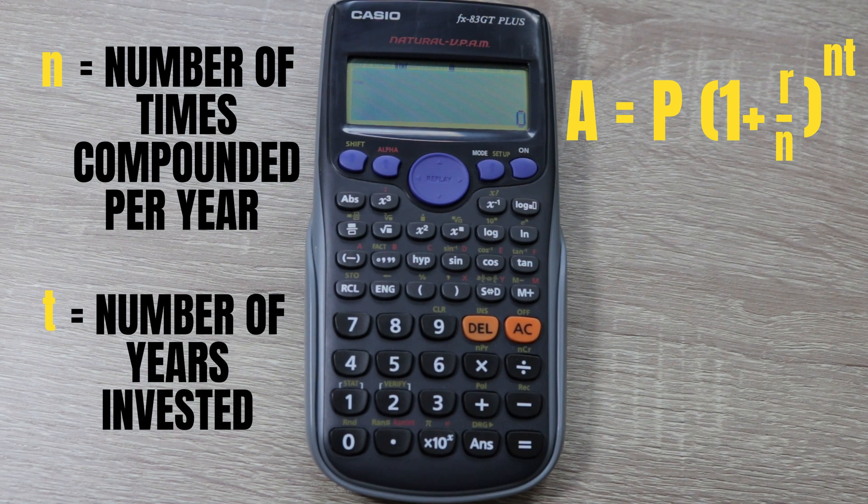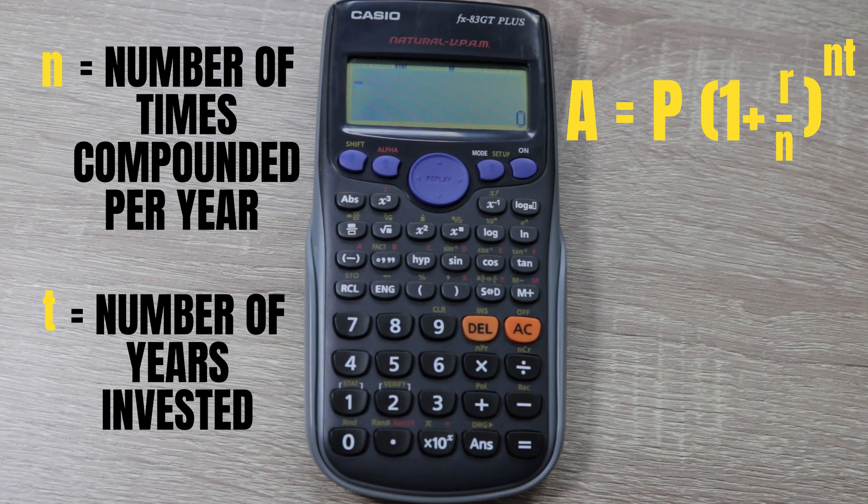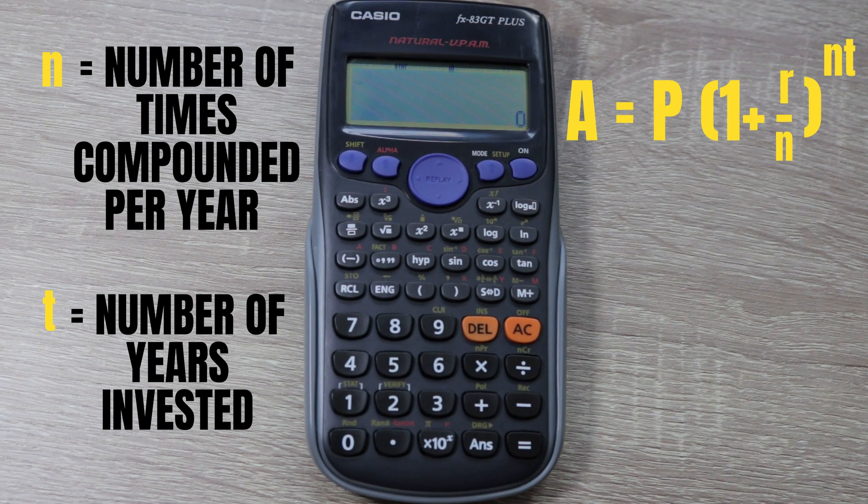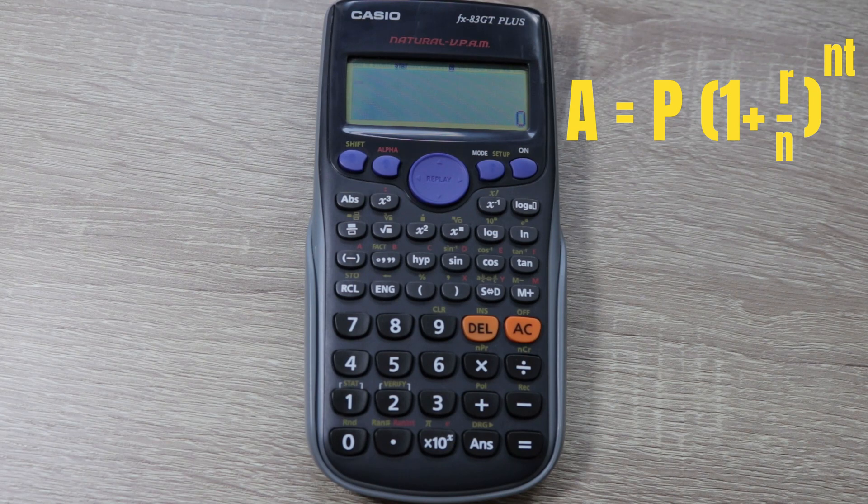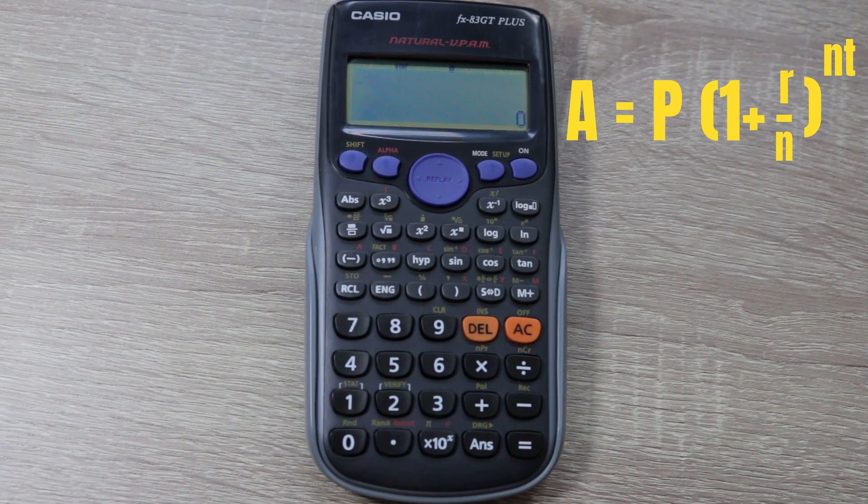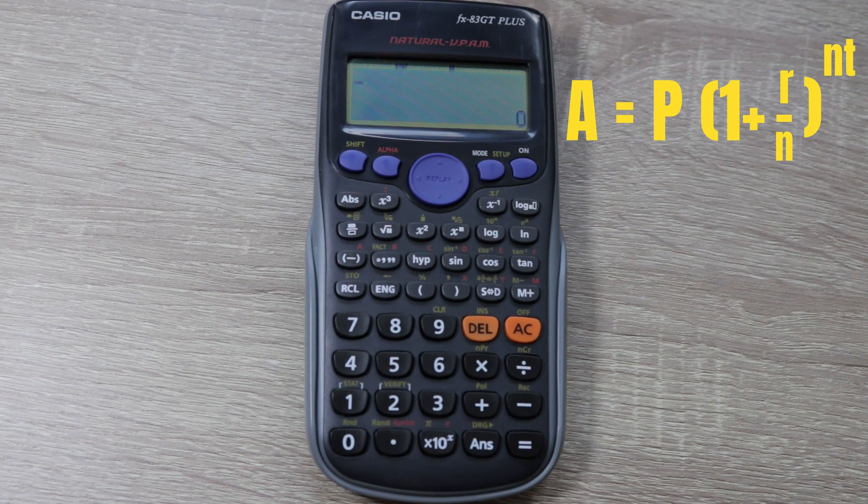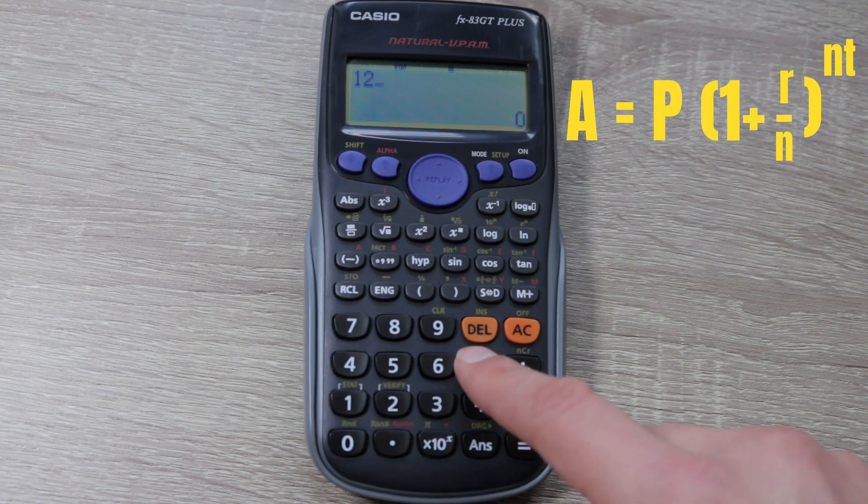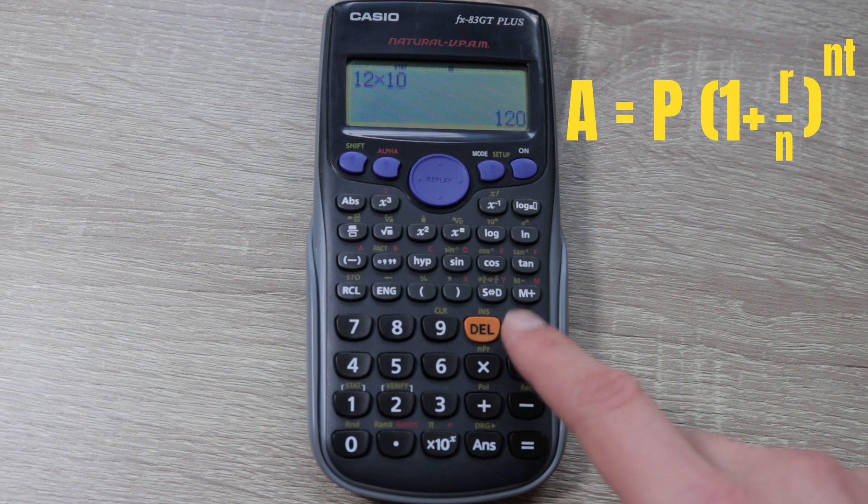We'll work out what's in the brackets first. First we'll take the number of times compounded per year and times that by our number of years. So we've got 12 periods, 12 months in one year, for 10 years. So 12 times 10 gets us 120.